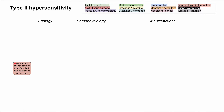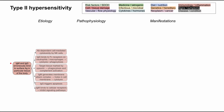IgG and IgM do many things in the inflammatory cascades, and these are some of the things that they do when activated. You'll have antibody-dependent cell-mediated cytotoxicity by the NK cells — natural killer cells. You'll have IgG binding to the Fc receptor on neutrophils and macrophages, causing cytolysis and phagocytosis respectively. The target tissue is marked by opsonin, in a process called opsonization, and you'll have phagocytosis and complement activation that way as well.